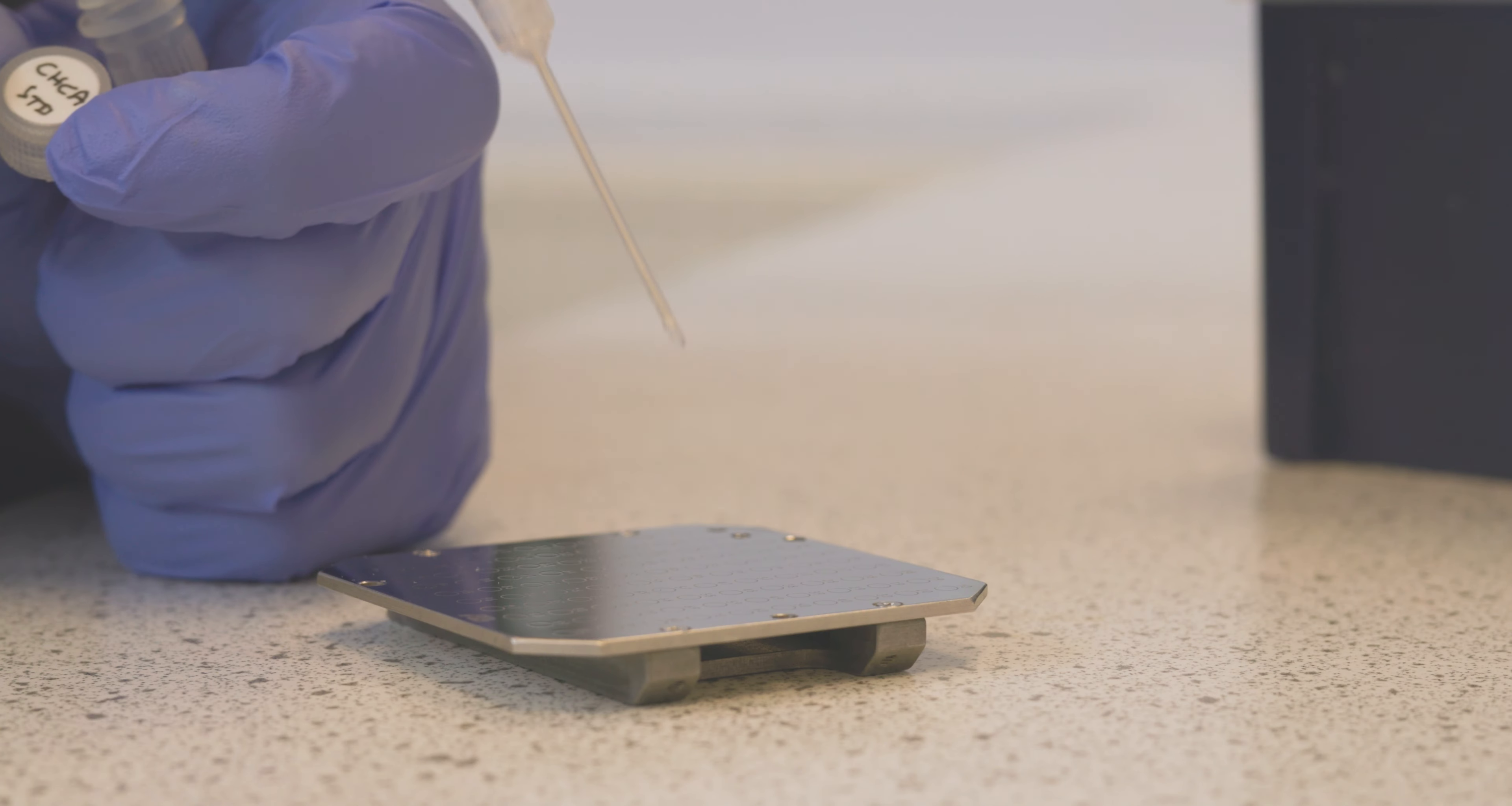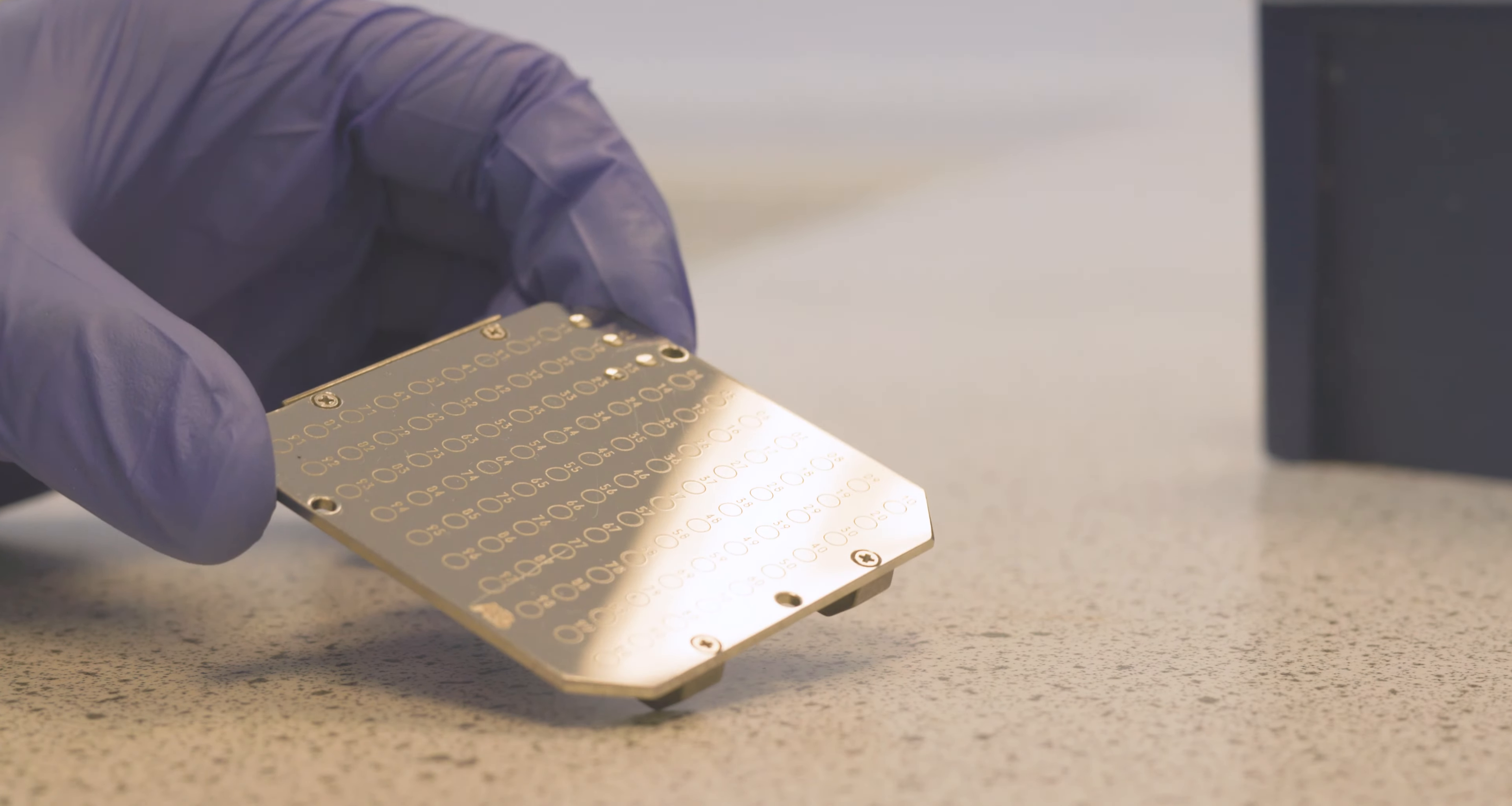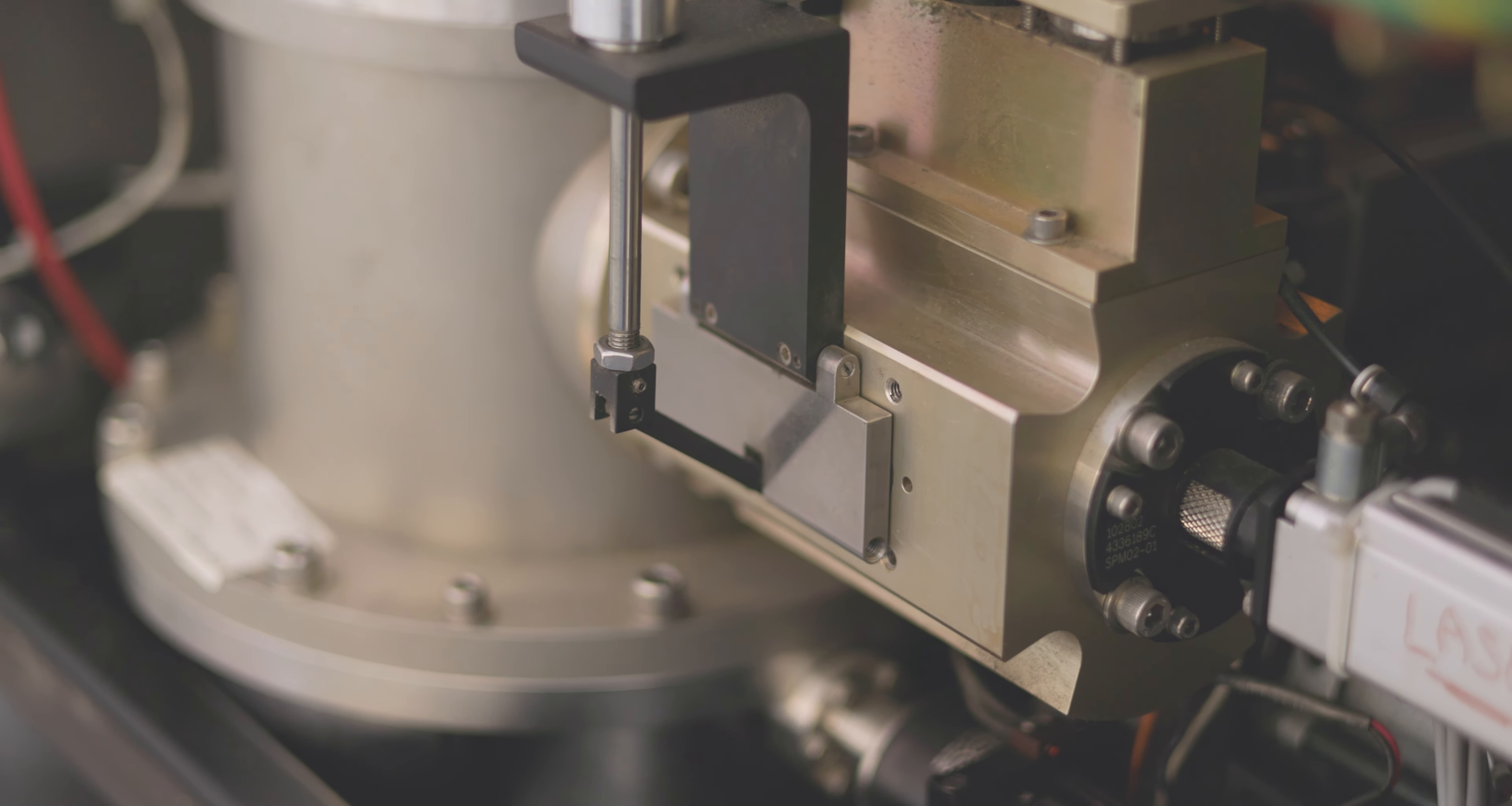On one of these sample plates, we dot our sample onto the little circles. In this case we're dotting four of the same sample, and now this is ready for insertion into the machine.